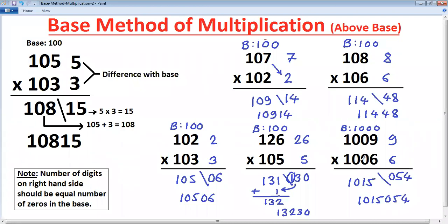So like this, you can multiply any two numbers using base method of multiplication if both numbers are near to the same base. Thank you.